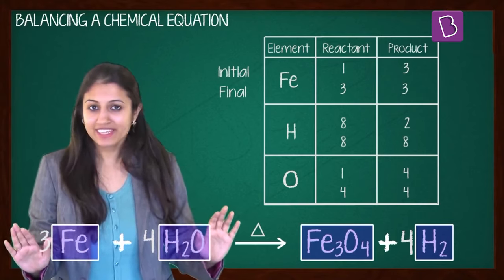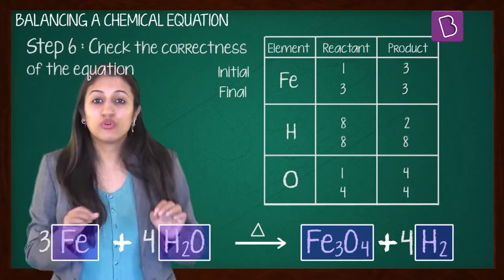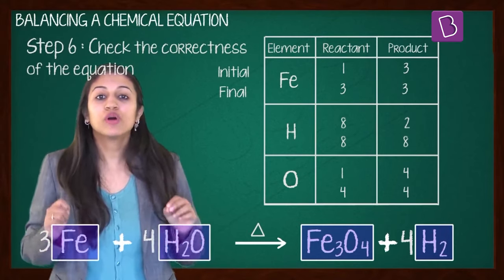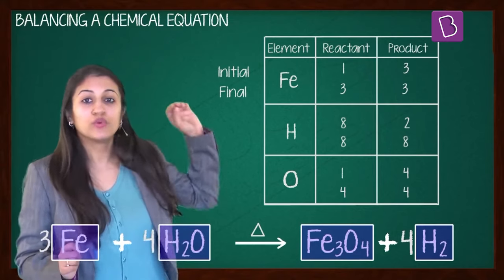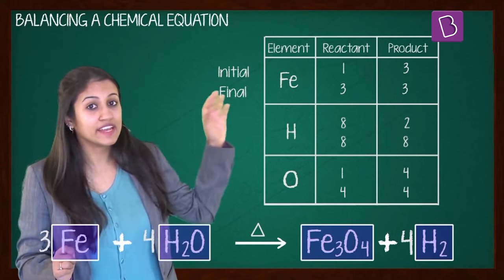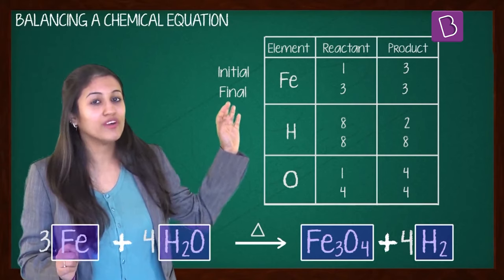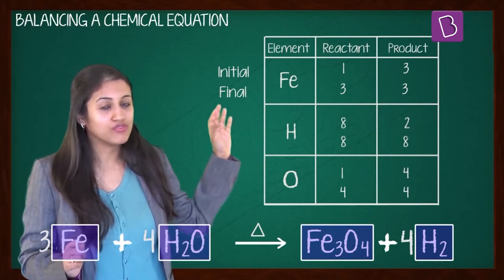Next step, step 6 is to check the correctness of this balanced equation. What you do is count the number of atoms of each element on both sides of the equation. Fe you have 3 and 3, H you have 8 and 8, and O you have 4 and 4.